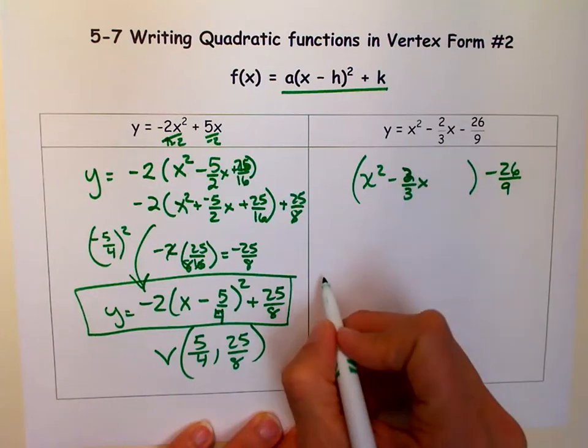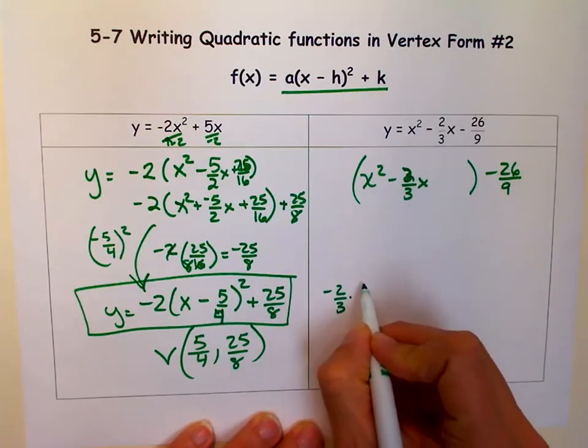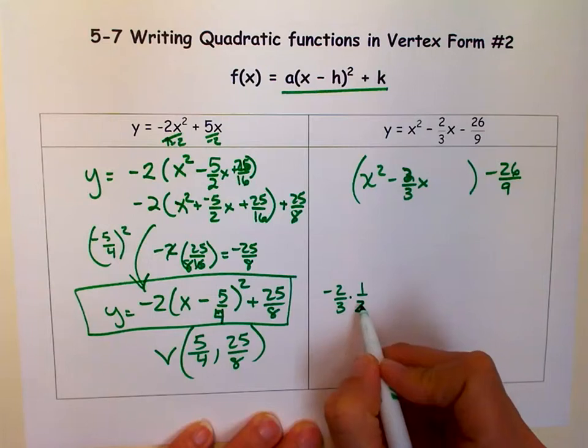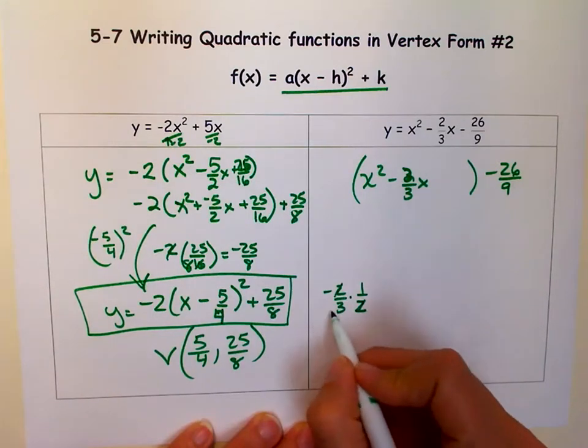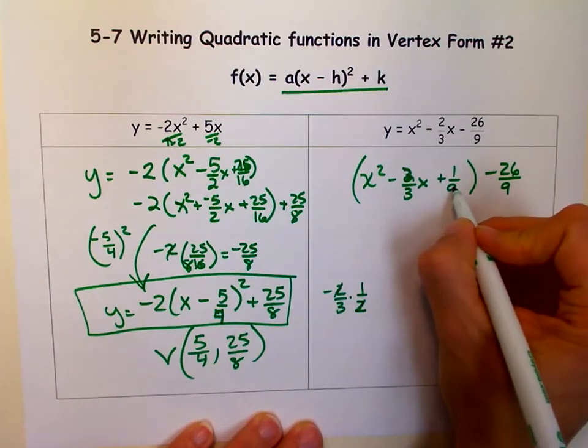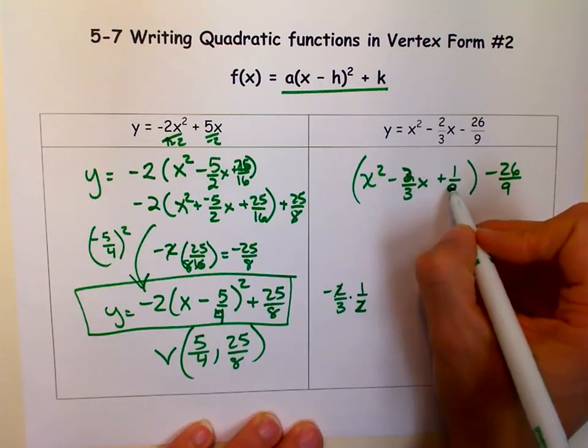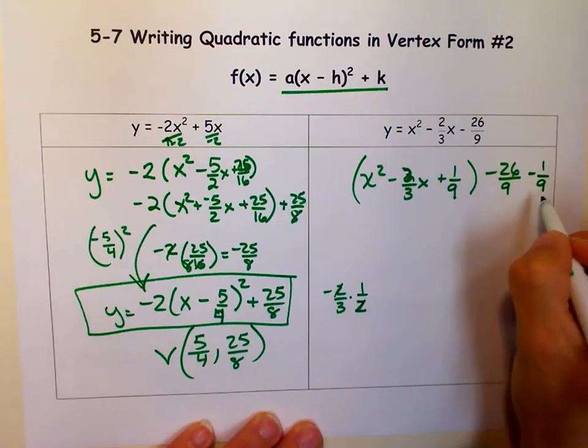And what I'm going to do is I'm going to take half of this. So over here. When you take half of 2 thirds, you get 1 third. Then I have to square it. That's 1 ninth. So if I add 1 ninth here, I have to subtract 1 ninth out here.